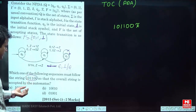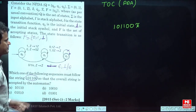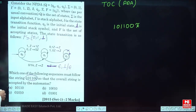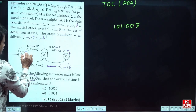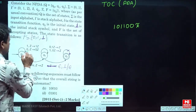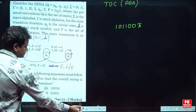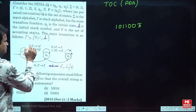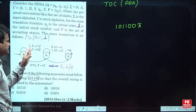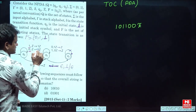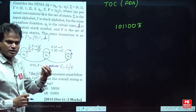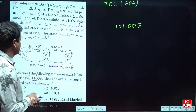First of all, understand this: whenever 0 comes or 1 comes, and the top symbol Z is anything, you keep pushing that symbol into the stack. When 0 comes, push 0; when 1 comes, push 1. So as long as 0 or 1 comes, you keep on pushing that symbol onto the stack.